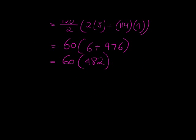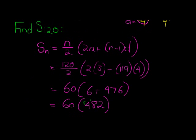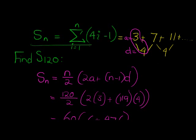And now 60 and this becomes 482. So let's multiply this. 0, 6 times 2 is 12, 6 times 8 is 48 plus 1 is 49, 6 times 4 is 24 plus 4 is 28. 28,920, that would be the sum of the first 120 terms if that series is expressed like this and eventually becomes that. Cool.